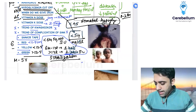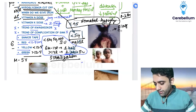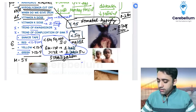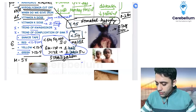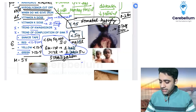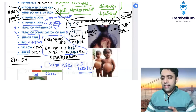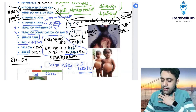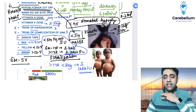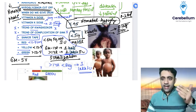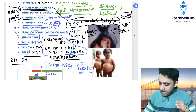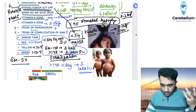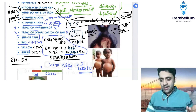The flag sign is seen in Kwashiorkor. It refers to alternating bands in a hair follicle — one band is bright and the other is dark — giving the appearance of a flag. This is a classic finding of Kwashiorkor.